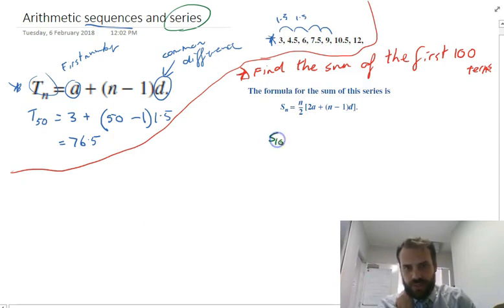For the first 100 terms, S_100, n is the number of terms, so 100 over 2. Open a bracket: 2 times a, which is the first term 3, plus n again. So n is 100 minus 1 times the common difference, which is 1.5.